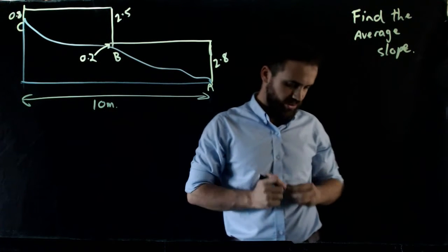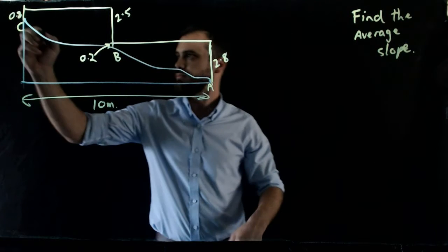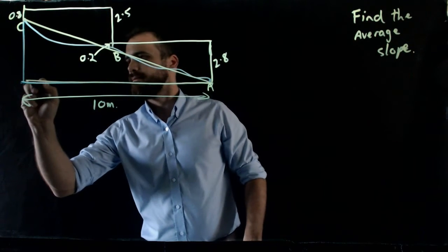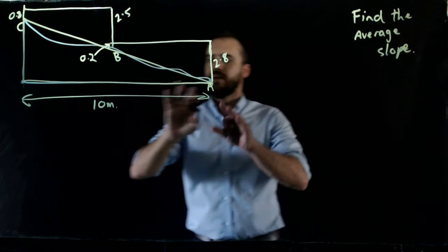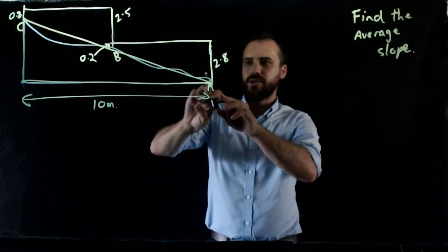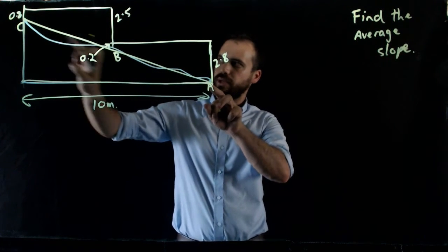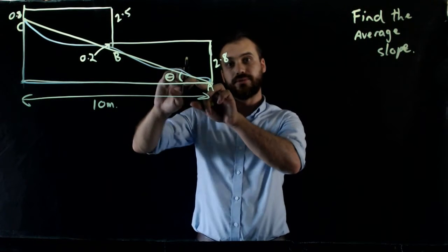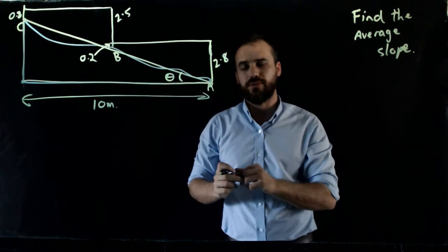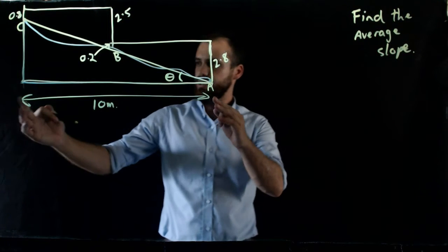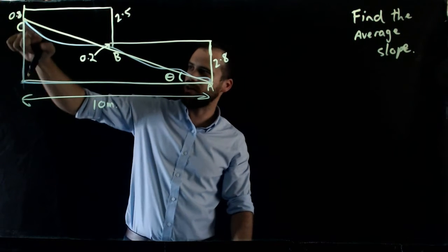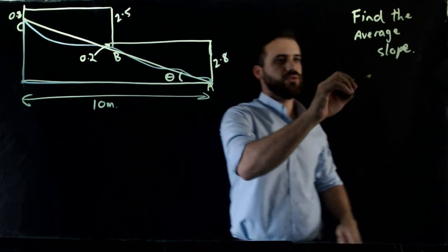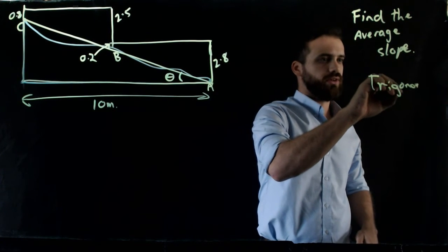I'm going to draw in that triangle so you can see what I mean. You can see we've got this hill that kind of goes like this, but we want to know the average slope between point A and point C. The average slope is this angle — that's what we mean by the average slope. Now we already know this distance; if we knew this height, we would have this line and this line, and we could use trigonometry to figure it out.